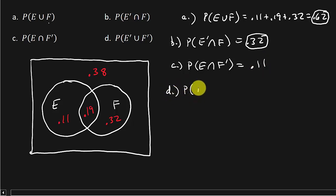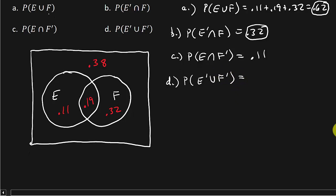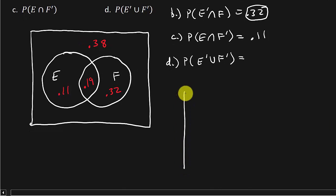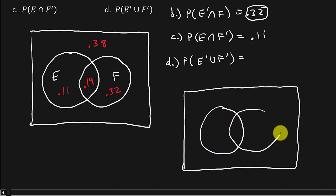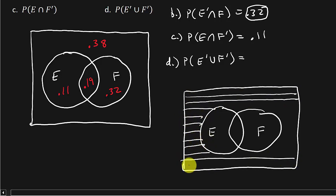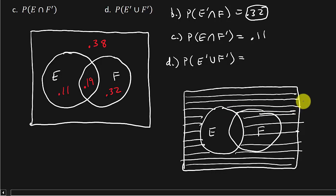And then we've got D is the probability of E prime union F prime. All right, so what would we get here? Well, let's draw a Venn diagram for this one. So there's E, there's F, and I want E prime, so I'm going to do E prime with horizontal lines.